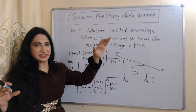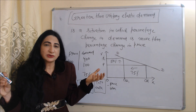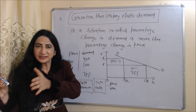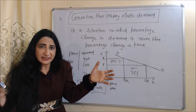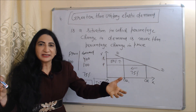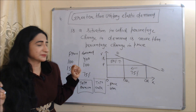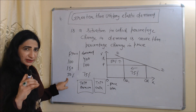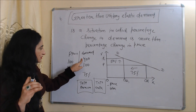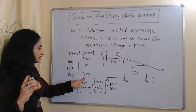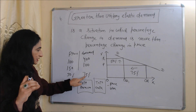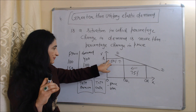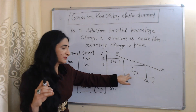The next type is greater than unitary elastic demand. Greater than unitary elastic demand is a situation in which the percentage change in demand is more than the percentage change in price. In this table, the price increases from 100 to 150 — a 50 percent increase. In response, demand reduces from 400 to 100 — a 75 percent reduction. So here, the percentage change in demand is more than the percentage change in price. In the diagram, price increases by 50 percent and demand reduces by 75 percent.